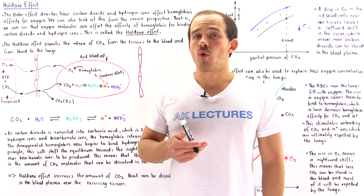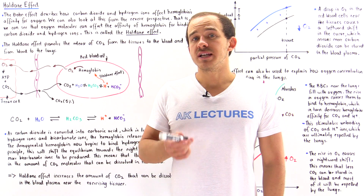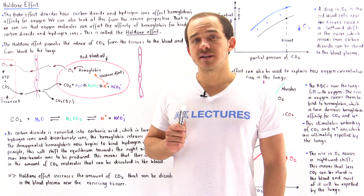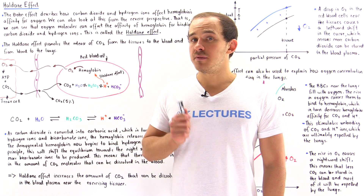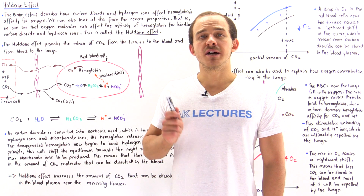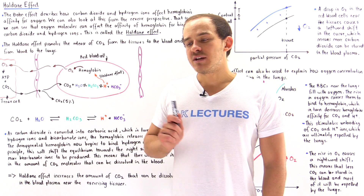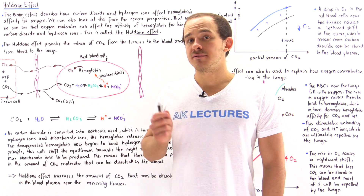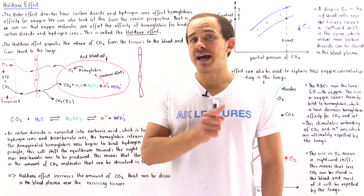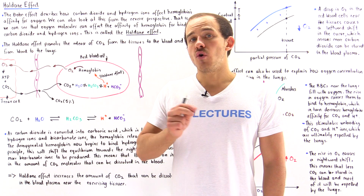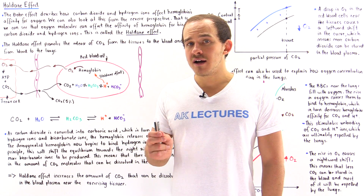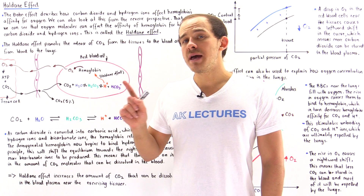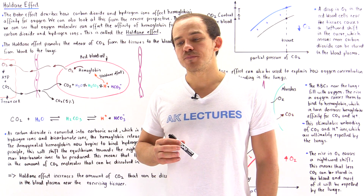Previously we focused on the Bohr Effect, which tells us that the concentration of carbon dioxide and H+ ions in the blood affects hemoglobin's affinity for oxygen. The Bohr Effect ultimately increases the amount of oxygen that can be absorbed by the exercising tissue and also increases the amount of oxygen that can be absorbed by the blood from the alveoli of our lungs.